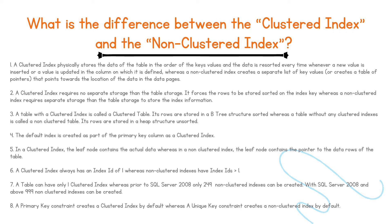Six: a clustered index always has an index ID of one, whereas non-clustered indexes have index IDs greater than one. Seven: a table can have only one clustered index, whereas prior to SQL Server 2008, only 249 non-clustered indexes can be created; with SQL Server 2008 and above, 999 non-clustered indexes can be created. Eight: a primary key constraint creates a clustered index by default, whereas a unique key constraint creates a non-clustered index by default. That's the difference between clustered index and non-clustered index.